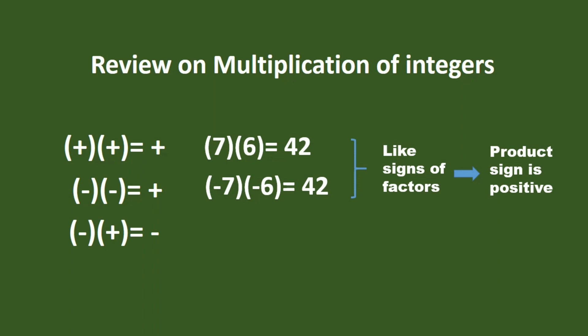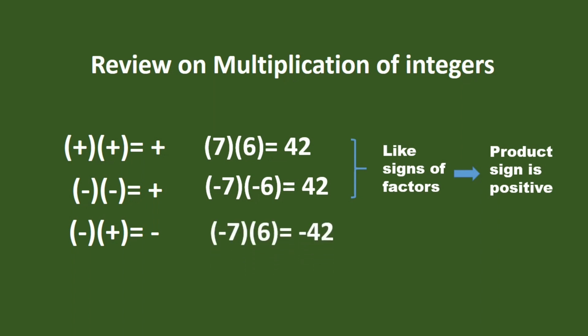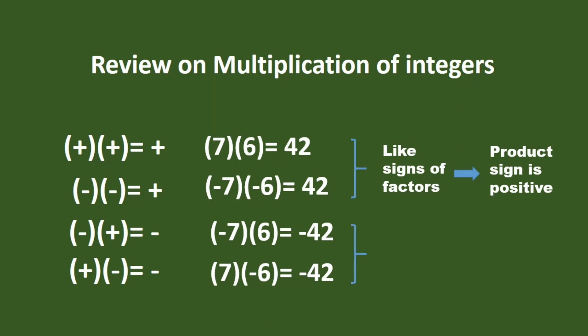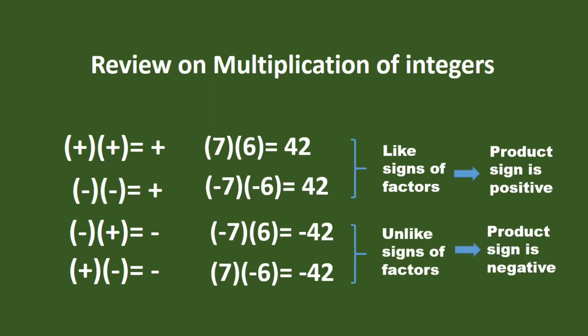If we multiply a negative integer and a positive integer, the product is negative — for example, negative 7 times 6 equals negative 42. Similarly, if we multiply a positive integer and a negative integer, the product is negative — for example, 7 times negative 6 is negative 42. This rule involves unlike signs of factors, and the product is always negative.